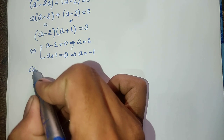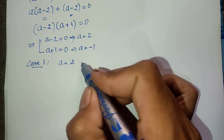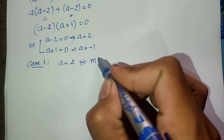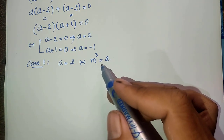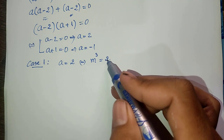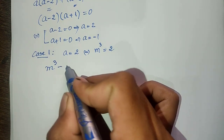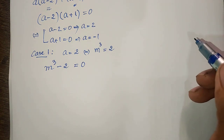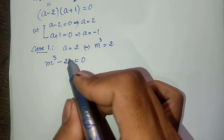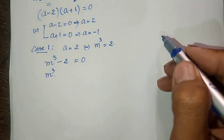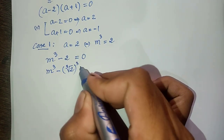For the first case, let x₁ correspond to a equals 2: we get m power 3 minus 2 equals 0. Now this we can factor using the difference of cubes. I write it as m power 3 minus cube root of 2, all to the power 3, equals 0.